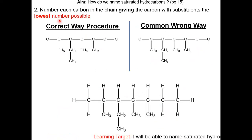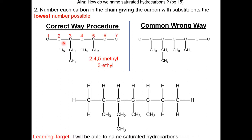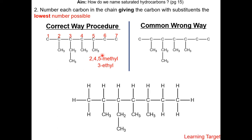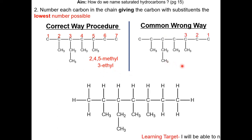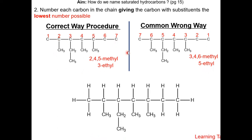In step 2, number each carbon in the chain, giving the carbon with substituents the lowest number possible. Here is the correct way: the methyl groups are on carbons 2, 4, and 5, and the ethyl group is on carbon 3. Here is the wrong way: the methyl groups would be on carbons 3, 4, and 6, and the ethyl group on carbon 5. The correct way gives substituents the lowest numbers possible.